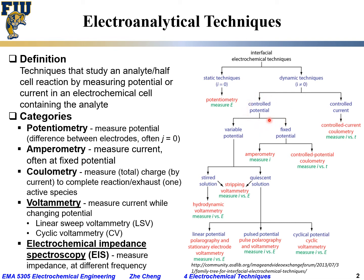Most measurements are controlled potential measurements. Within controlled potential, there are different categories: some use fixed potential and some use variable or changing potential. For fixed potential — where you apply a constant voltage between electrodes — you can do amperometry, measuring current over time. Alternatively, you can do controlled potential coulometry, measuring current versus time at fixed potential until one analyte is completely exhausted and the electrochemical reaction stops.